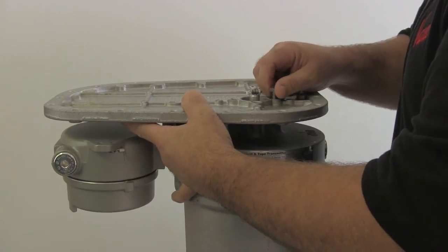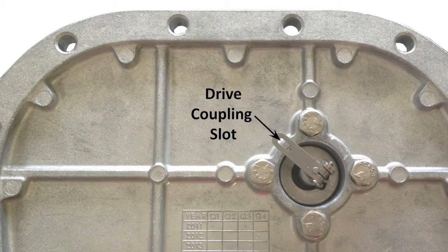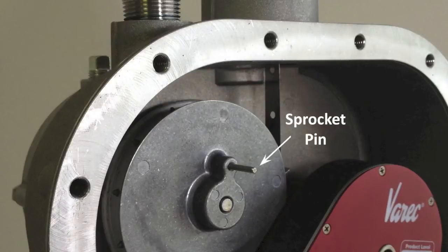You are now ready to put the transmitter on the back of the gauge head, but you need to make sure that the transmitter drive coupling slot engages the pin on the gauge head sprocket wheel.